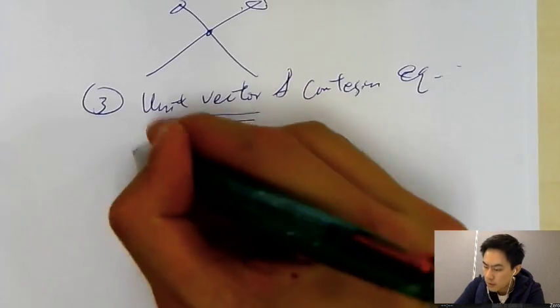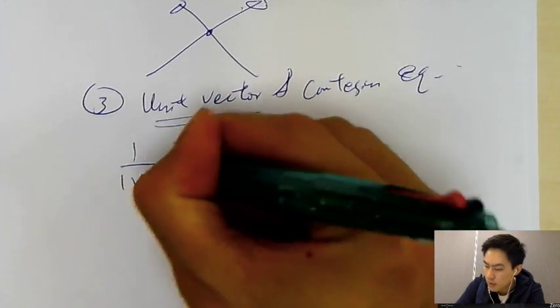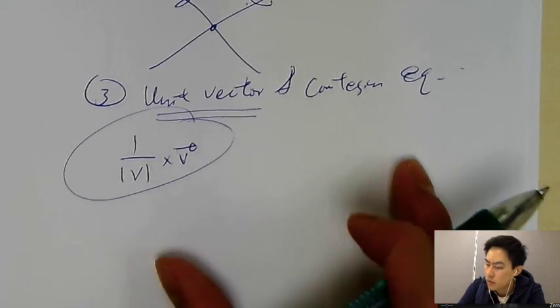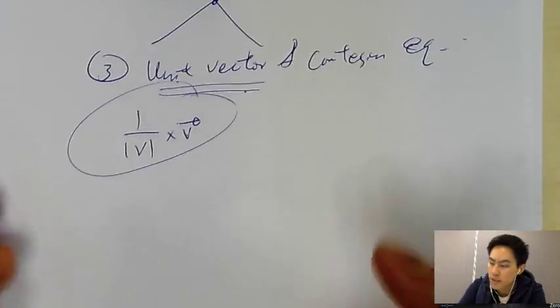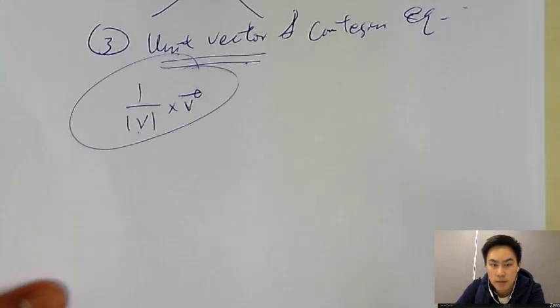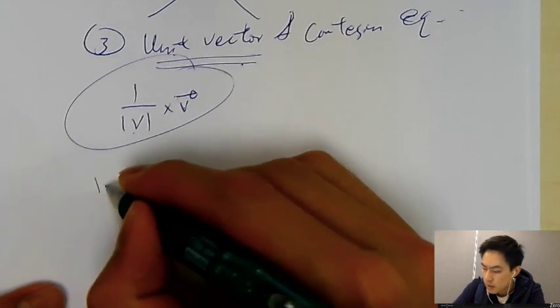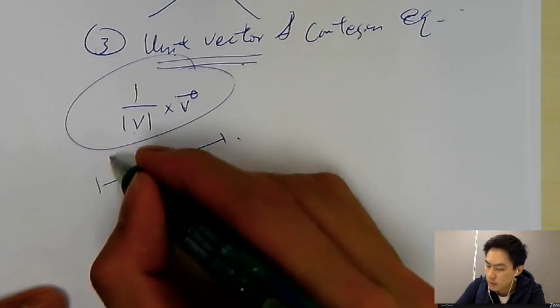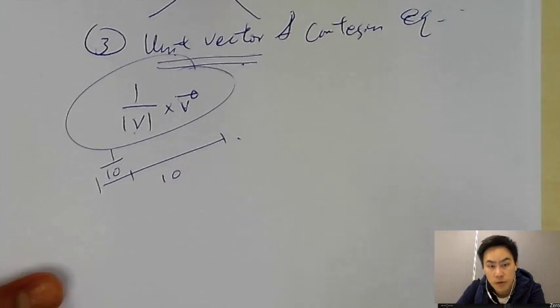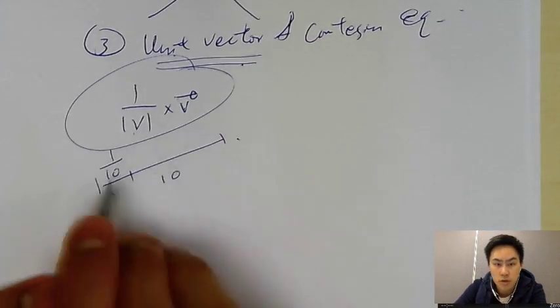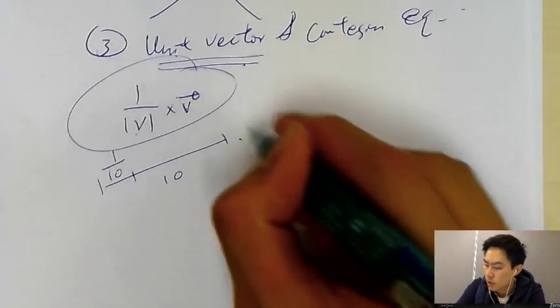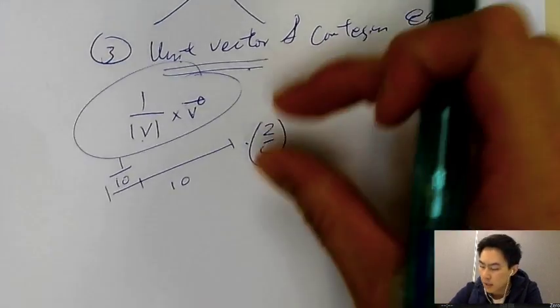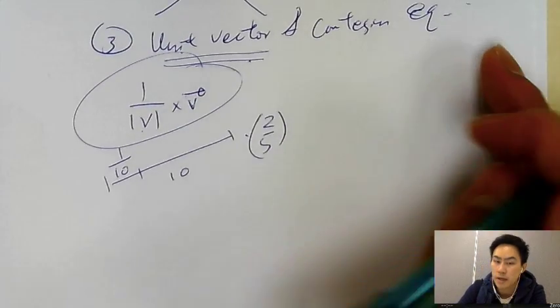Unit vector is always defined as 1 over V times the vector. This concept is very easy to understand. You just need to know why it's called unit vector and why it's like that. Basically, if the distance here is 10, one unit of that would be 1 over 10. But that is a vector. So a vector, let's say it's pointing to 2, 5—this one will be wrong, but just an example for understanding.